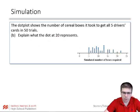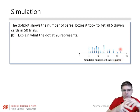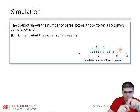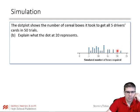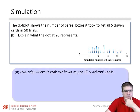That means on that trial, it took 20 different boxes of cereal, or it took 20 different trials to get those five unique numbers. And that's what that represents. So yeah, that's one trial where it took 20 boxes to get all five driver's cards.